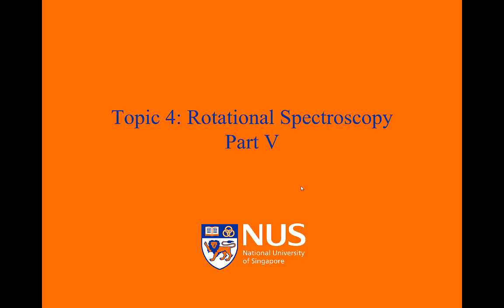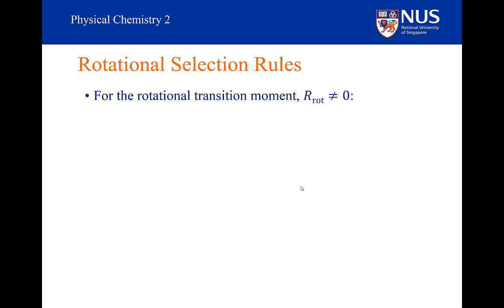What are the selection rules of this system? They come about from a consideration of the transition dipole moment. When will the rotational transition moment be non-zero? First of all, the rotational transition moment will only be non-zero if the molecule has a permanent dipole moment. We've already justified that at the beginning of the lecture. A homonuclear diatomic will not interact with an electric field, and so cannot interact with electromagnetic radiation.